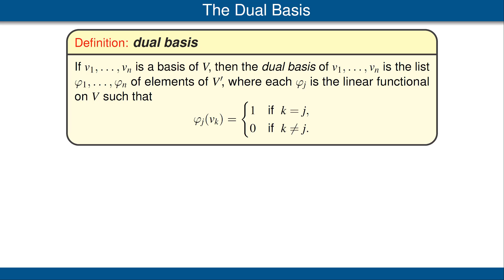Each basis of V is associated with a basis of the dual space V′, called the dual basis. Suppose we have a basis v₁, ..., vₙ of V. The dual basis consists of elements φ₁, ..., φₙ of V′, where each φⱼ is a linear functional on V such that φⱼ(vₖ) equals 1 if k equals j, and 0 otherwise. Since a linear map is uniquely determined by what it does to the basis vectors, specifying φⱼ(vₖ) really does define φⱼ.